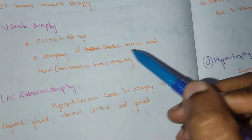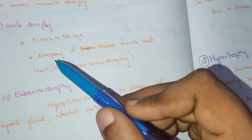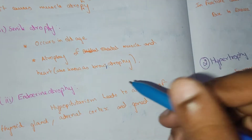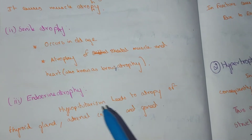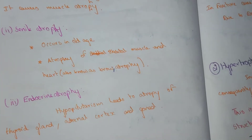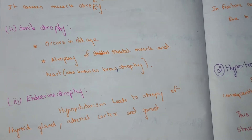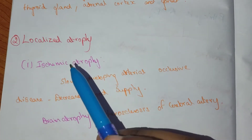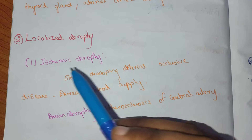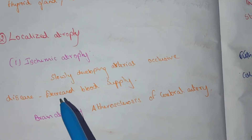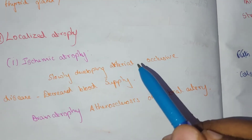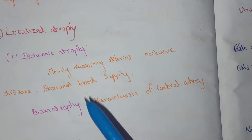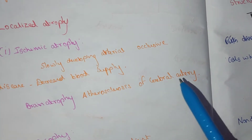Atrophy of skeletal muscle and heart occurs with aging. Atrophy of the heart is called brown atrophy. Endocrine atrophy occurs in hypopituitarism. Blood supply atrophy — for example, brain atrophy — is caused by atherosclerosis of the cerebral arteries.